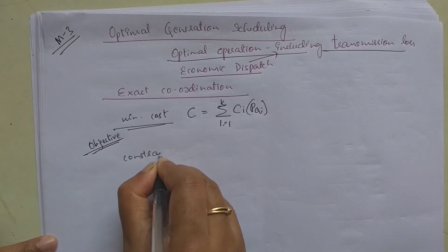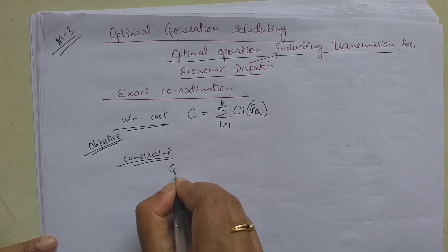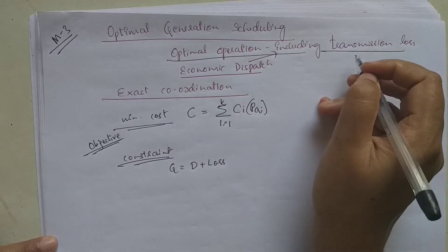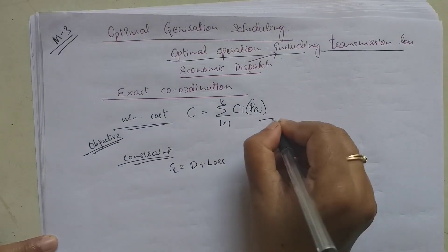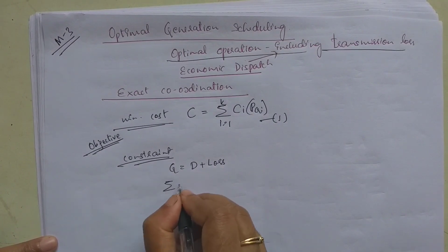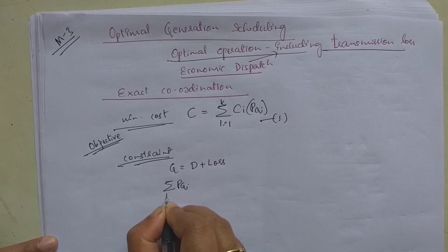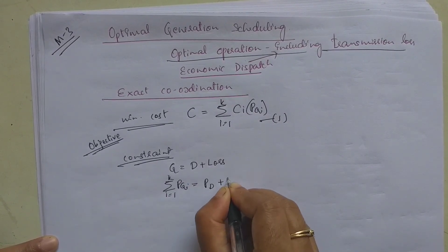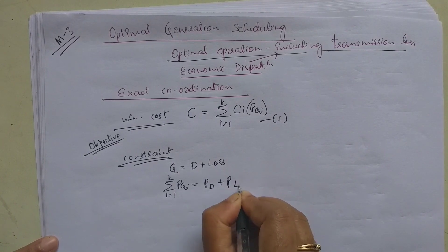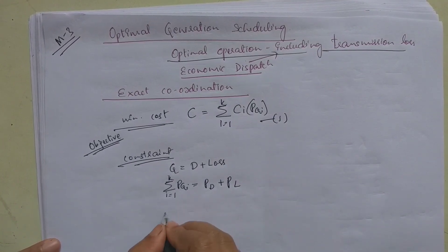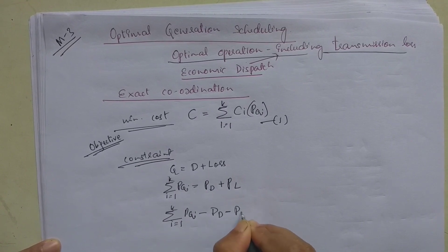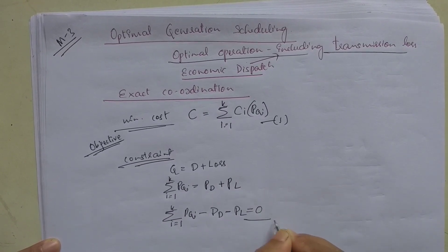The objective is subjected to a constraint. In power systems, generation equals demand plus loss, so we have to consider transmission loss. The constraint is: summation of P_Gi (i = 1 to k) minus P_D minus P_L equals zero — take this as equation 2.